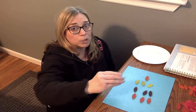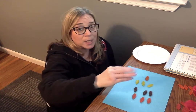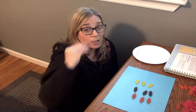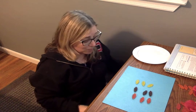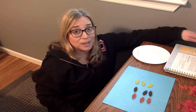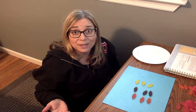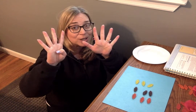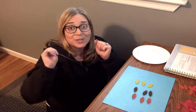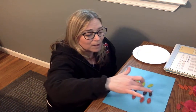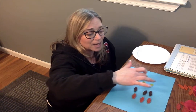Along comes the hungry shark. He's going to eat one fish. He ate one fish. How many fish are left? Do you know? He had ten fish and he ate one fish. How many are left? Did you say nine? Let's count them. One, two, three, four, five, six, seven, eight, nine.